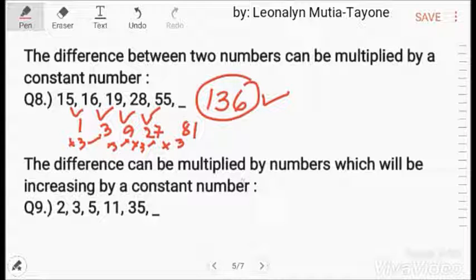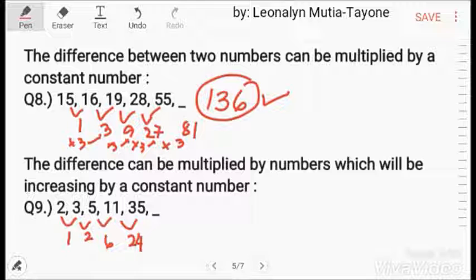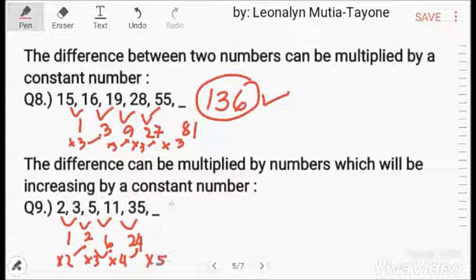Next, the difference can be multiplied by numbers which will be increasing by constant number. So, the difference is 1, 2, 6, 24. So, the differences are multiplied by numbers which are in increasing order. This is times 2, so it's 2, times 3, so it's 6 times 4, so it's 24. So, 24 times 5 and that is 120. The answer is 155.